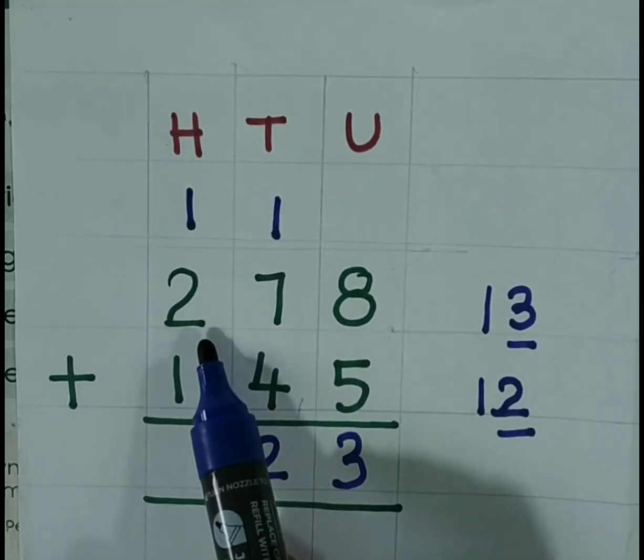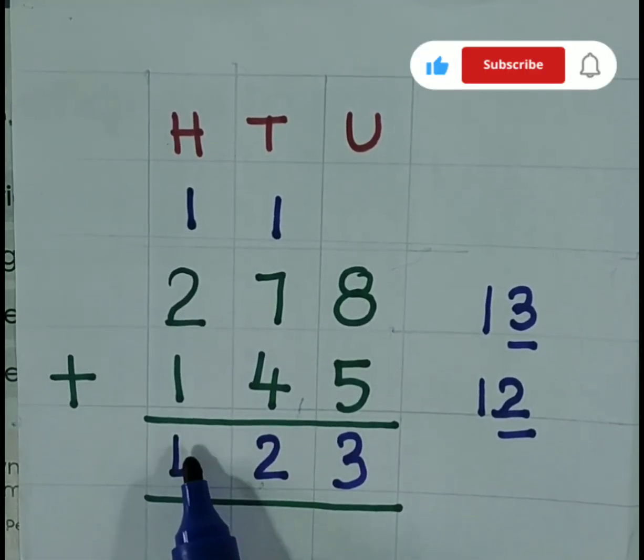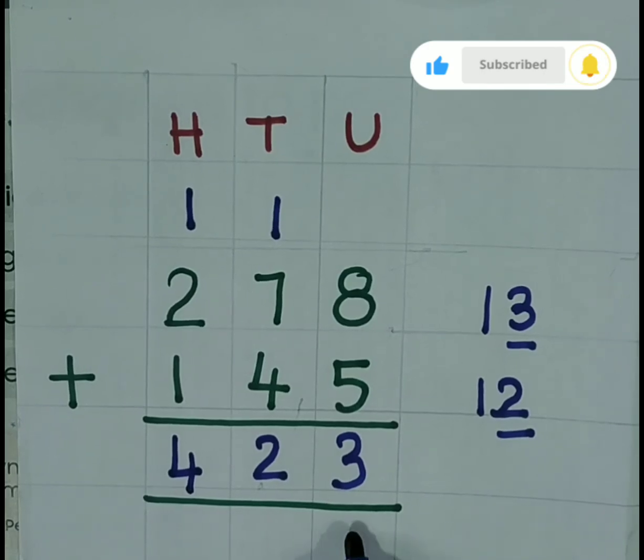1 plus 2 is 3. 3 plus 1 is 4. Answer is 423.